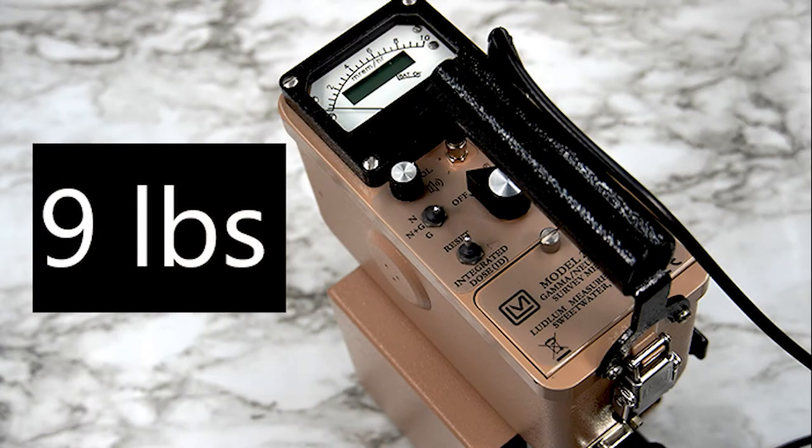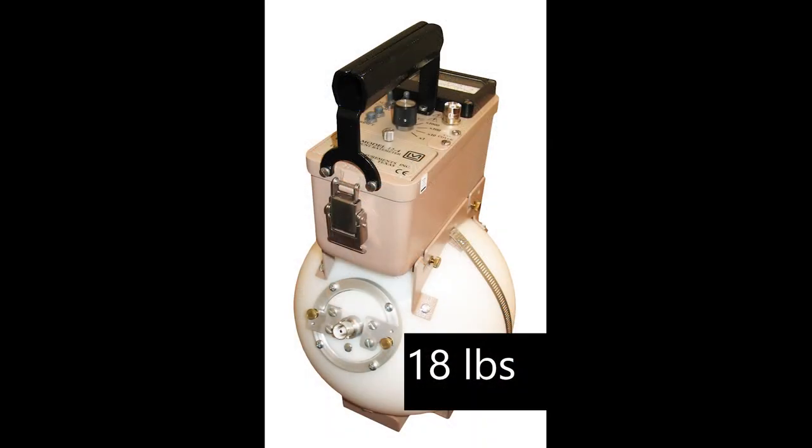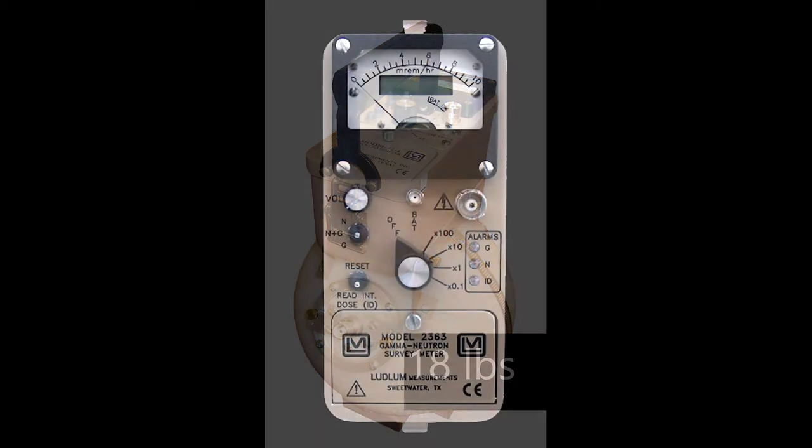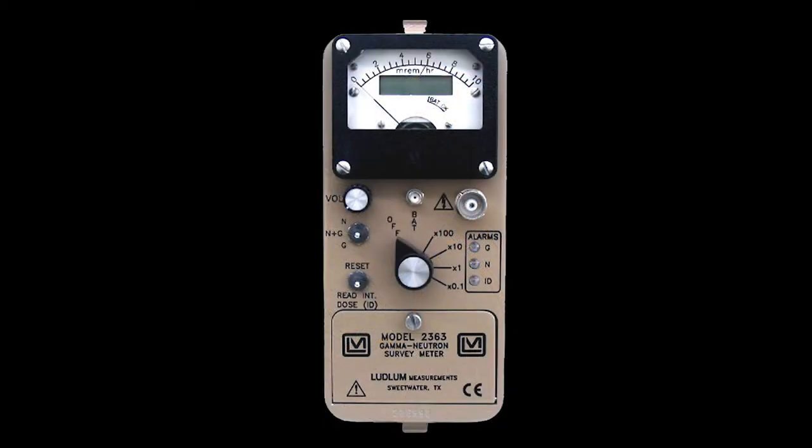The weight of the Model 2363 with the Priscilla detector is about 9 pounds, which is a big improvement over the 18 pounds of our standard neutron detector. All of the controls for the Model 2363 are on the front of the instrument.